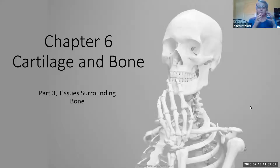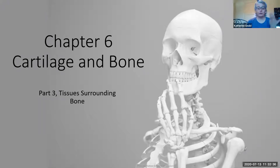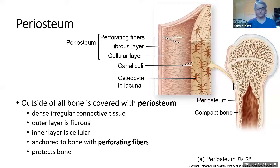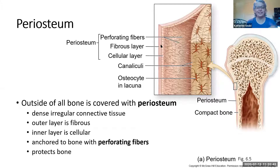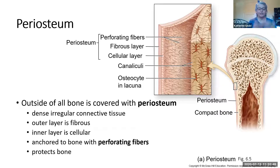Our bones are not just unprotected — they are actually surrounded by connective tissue layers that protect them. The outer layer is the cleverly named periosteum. Remember, osteo means bone, peri means around.